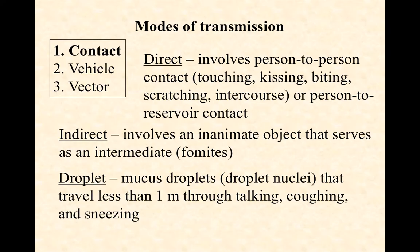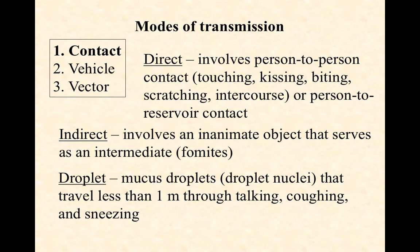Droplet contact transmission occurs when mucus droplets — sometimes called droplet nuclei — travel less than one meter through talking, coughing, or sneezing. So if someone sneezes and you're standing right next to them, you inhale those droplets and get sick. That's droplet contact transmission — the key is that the distance is less than one meter.